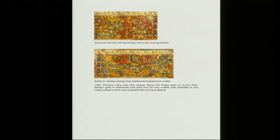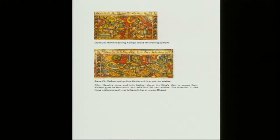After Mantara comes and tells Kaikeyi about the king's plan to crown Ram, Kaikeyi goes to Dasharatha and asks him for two wishes, intending to use these wishes in such a way as to benefit her own son Bharat. There had been a story that Dasharatha once promised Kaikeyi he would fulfill two of her wishes, and now it was time for Kaikeyi to use that in the benefit of her own son so that Ram cannot become the king and Bharat becomes king instead.